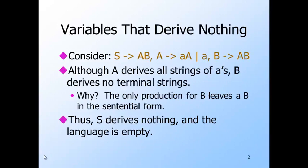Here is an example of a really bad grammar. A is okay — it derives all strings of one or more A's using its two productions. However, B has only one production, and that production has B in its body. Thus, once a sentential form has a B in it, you can never get rid of that B. As a result, B derives no terminal strings. To make matters worse, S has only one production, so that must be the first used in any derivation. But that production introduces a B into the sentential form, so it is impossible to derive any terminal string from S, and therefore the language of this grammar is empty.